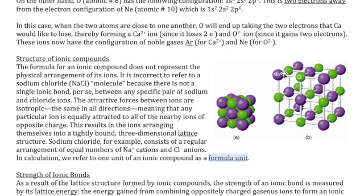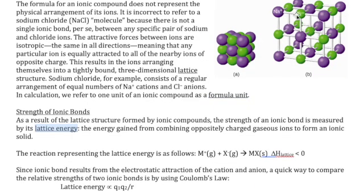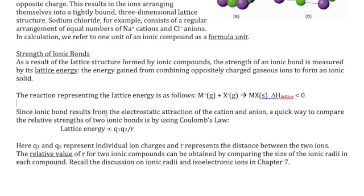The strength of an ionic bond is quantified using lattice energy — how much energy is holding this lattice together. Lattice energy is measured by combining oppositely charged gaseous ions to form an ionic solid: you take your cation in the gas state plus your anion in the gas state, combining them to form your ionic compound in the solid state. The energy is negative because you're going from separated ions into a more stable combined compound — so it's a very exothermic process.